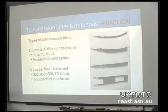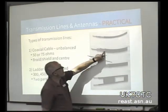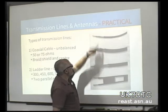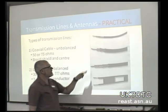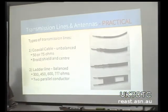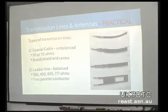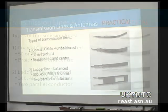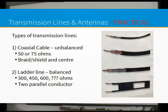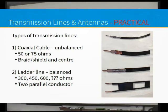Coaxial cable usually has a braid on the outside and then there is a centre conductor. In the practical we'll give you some examples and get you to identify whether it's balanced or unbalanced, coax or ladder line.